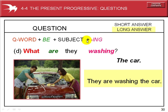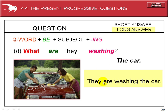Let's look at another example. The question word: what? What are they washing? 'Are' is used because there is a plural subject — two people. What are they washing? The car is the short answer. The long answer: They are washing the car. 'They' refers to the two people. Right now, they are washing the car.